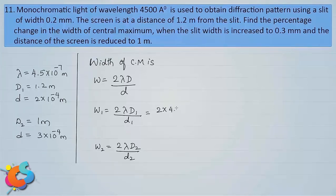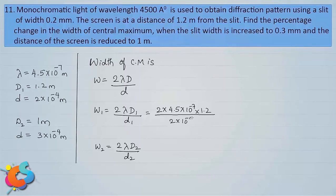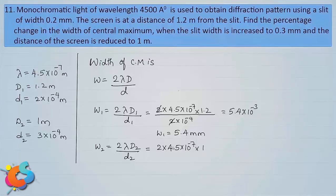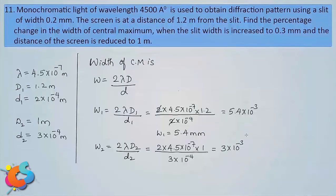Substituting into W₁: W₁ = 2 × 4.5 × 10⁻⁷ × 1.2 / (2 × 10⁻⁴). The 2 cancels, leaving 4.5 × 1.2 = 5.4 × 10⁻³ meter, so W₁ = 5.4 mm. For W₂: W₂ = 2 × 4.5 × 10⁻⁷ × 1 / (3 × 10⁻⁴) = 9/3 × 10⁻³ = 3 × 10⁻³ meter, so W₂ = 3 mm.